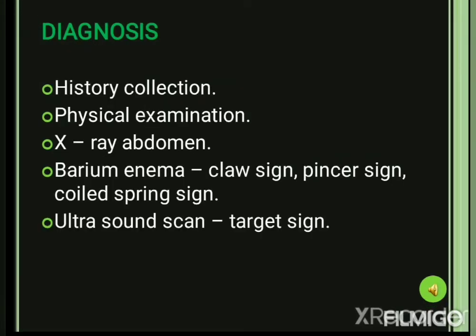How do we diagnose intussusception? It is done through detailed history collection and physical examination, where we can palpate a sausage-shaped mass on the abdomen. Then X-ray abdomen and barium enema, which show typical features such as claw sign, pincer sign, and coiled spring sign. Through ultrasound scan we can find the target sign, which is a peculiar feature of this condition.